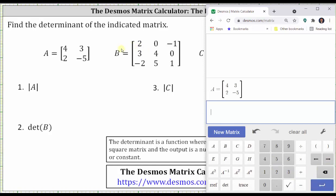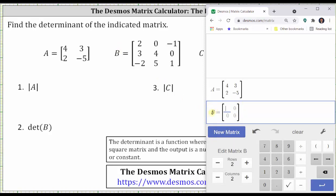And now we enter matrix B. We click new matrix. By default, the new matrix is matrix B, since B comes after A. Matrix B is a three by three matrix. We change the dimensions below. And once again, enter the elements.